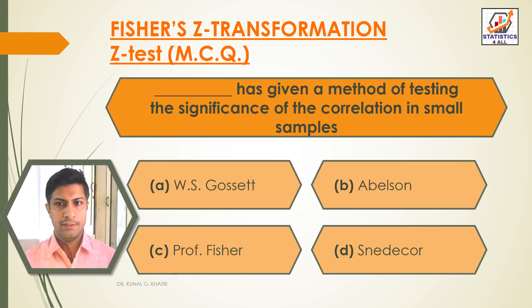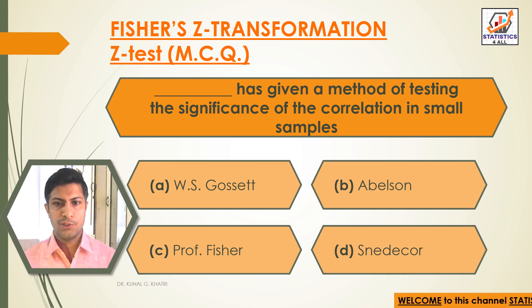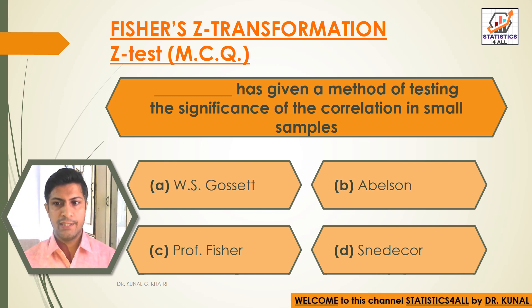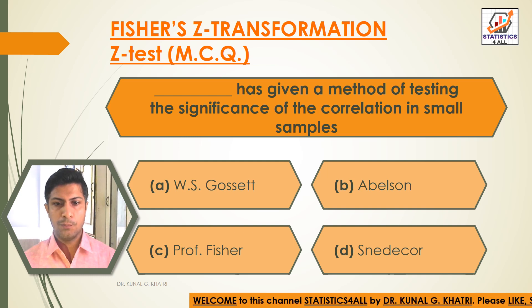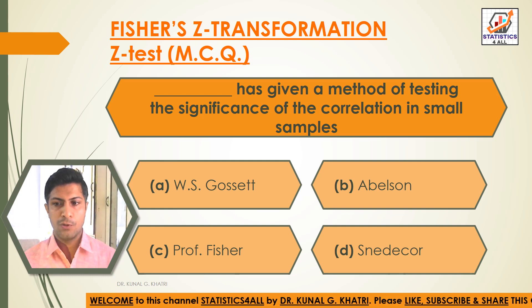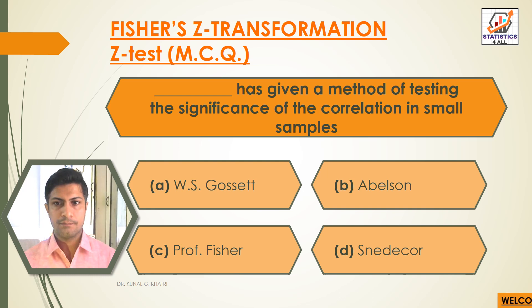First question. Dash has given a method of testing the significance of the correlation in small samples. Option A: W.S. Gossett. Option B: Abelson. Option C: Professor Fisher. Option D: Snedeker.